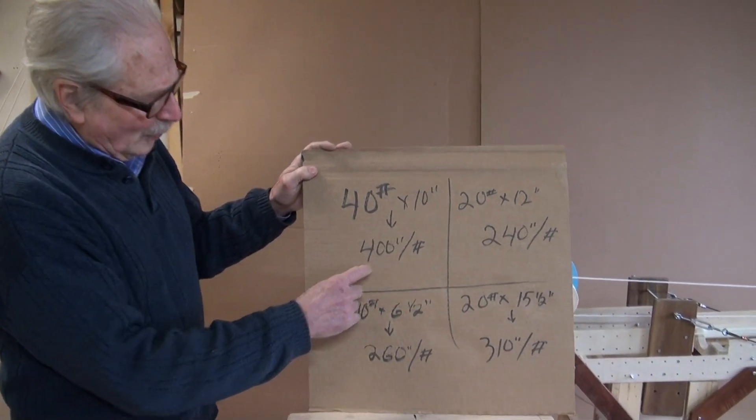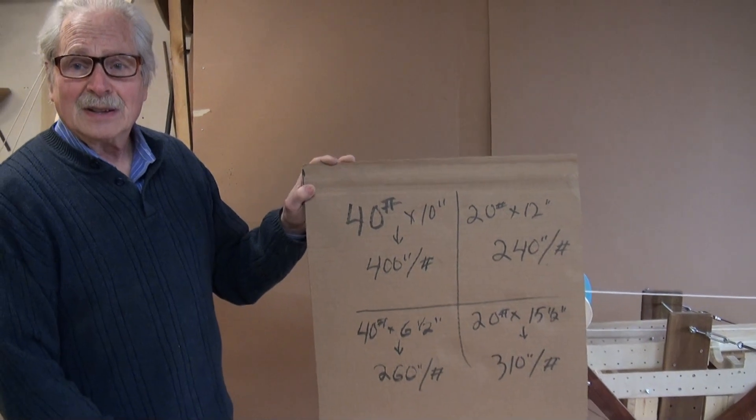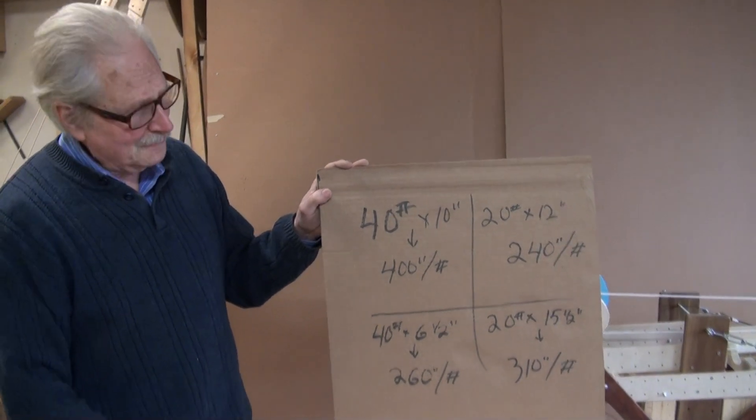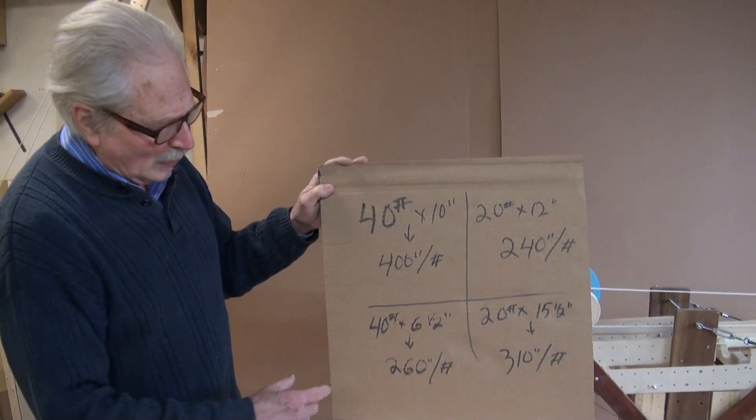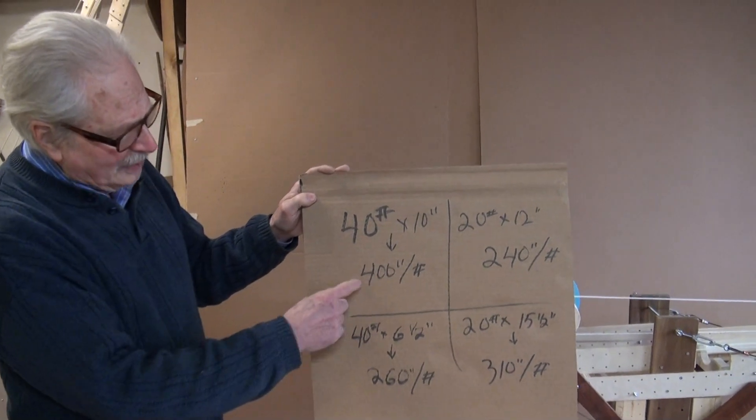So that's 400 inch pounds. Pounds times inches. That's how you get it. So on one side of the equation you have 400 inch pounds.